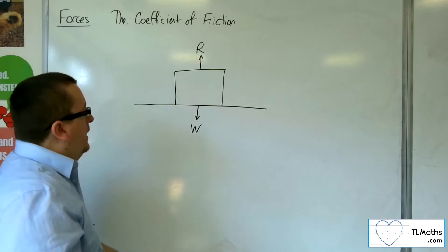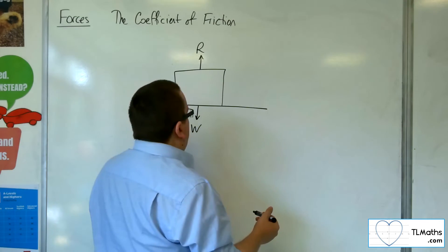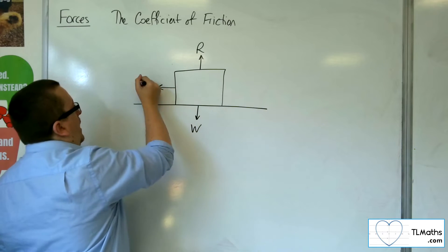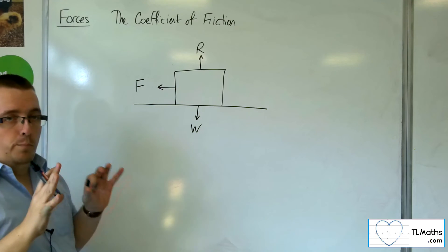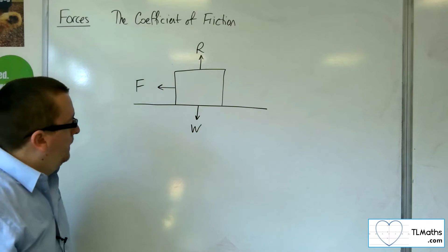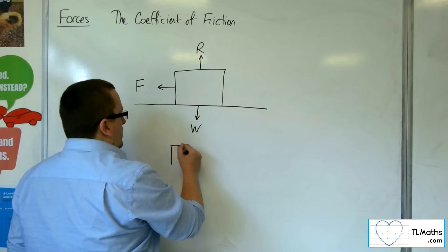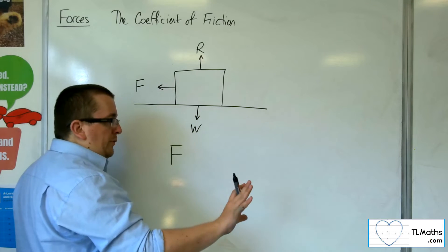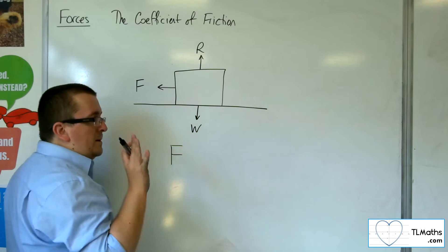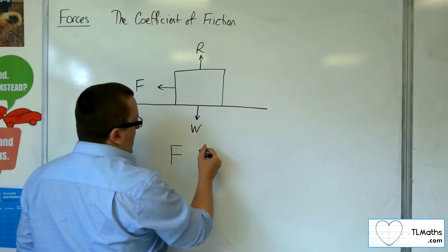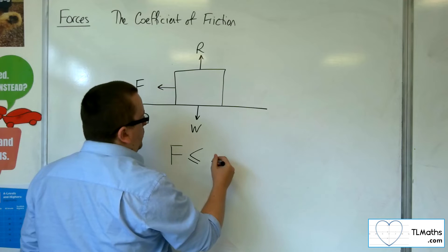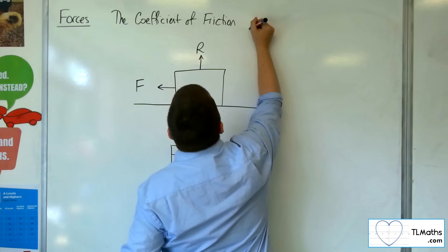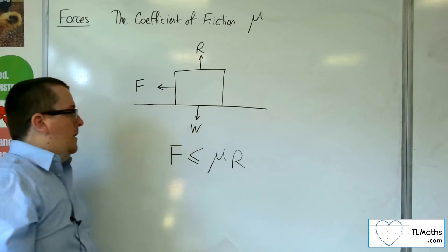We can say that the frictional force working against you pushing the box, up to the moment when it is about to move, F is less than or equal to μ times R. μ is our coefficient of friction.